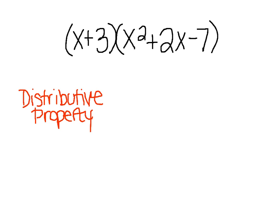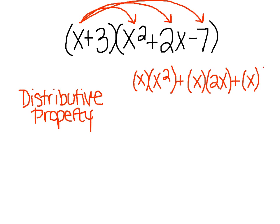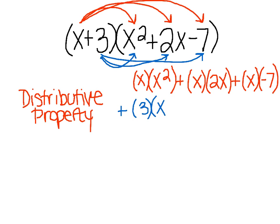With the distributive property with two binomials, we took our first term and multiplied it to each term in the second binomial. Here we're going to do the same thing — take our first term and multiply it to every term in the trinomial. So we'll have x times x squared, plus x times 2x, plus x times negative 7. Then we take our second term and multiply it with every term in the trinomial, giving us plus 3 times x squared, plus 3 times 2x, plus 3 times negative 7.